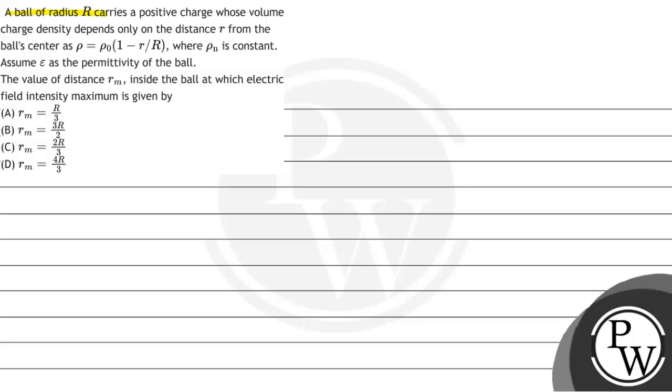The question is that a ball of radius R carries a positive charge whose volume charge density depends only on the distance r from the ball's center as ρ = ρ₀(1 - r/R), where ρ₀ is constant. Assume ε₀ as the permittivity of the ball. The value of distance r_m inside the ball at which electric field intensity maximum is given by.